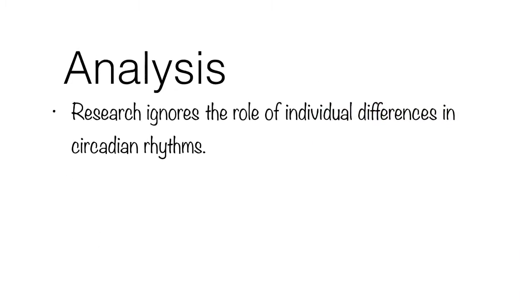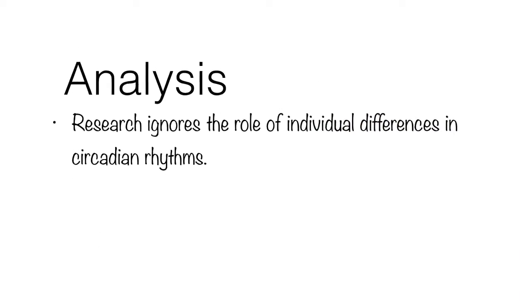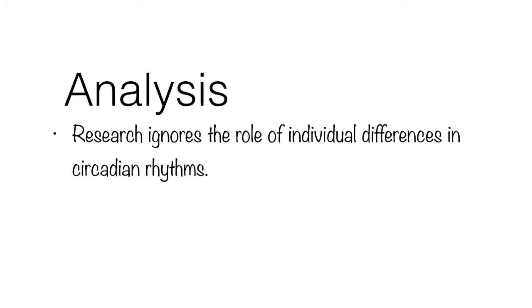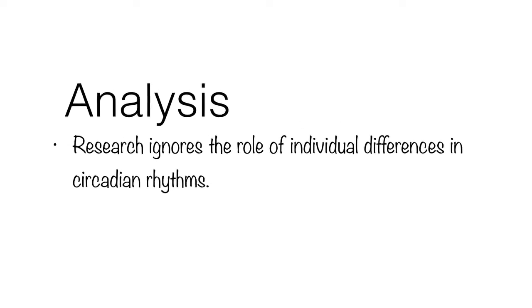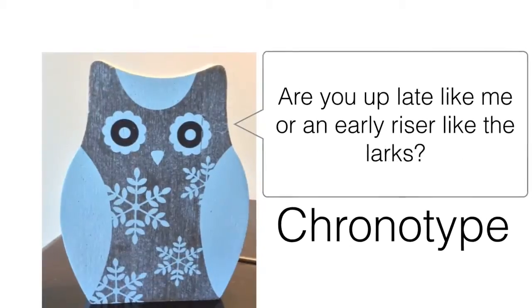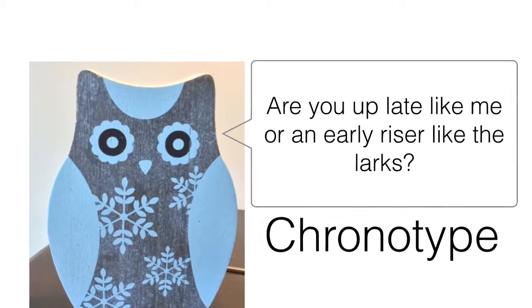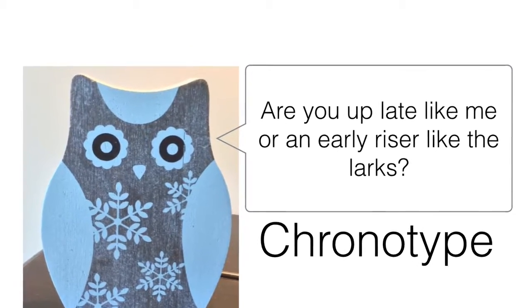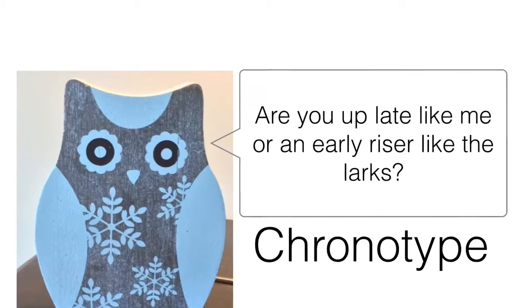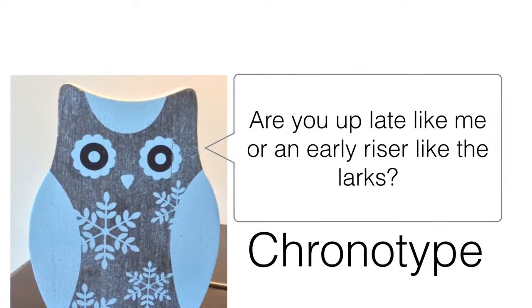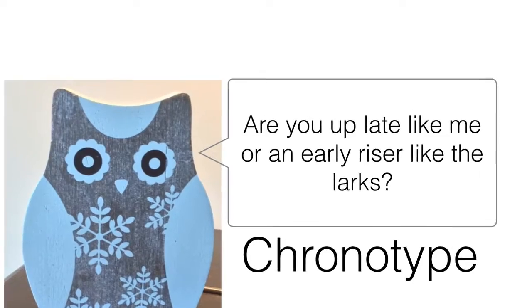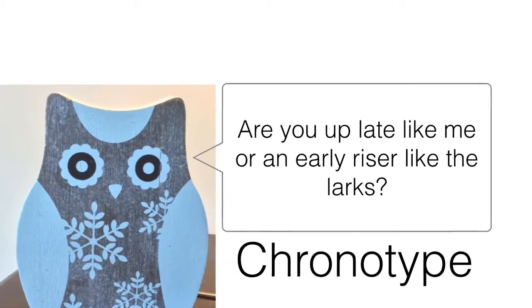It could also be argued that research into the sleep-wake cycle ignores individual differences in our circadian cycle. For example, some people are more awake in the morning and some in the evening. Although both types of people have a 24-hour cycle for sleep and wake, the peaks and troughs in the cycle of chemicals behind the rhythm may differ. A person's chronotype, for example, might be linked to their sensitivity to external cues, which may in turn affect the release of chemicals such as melatonin.